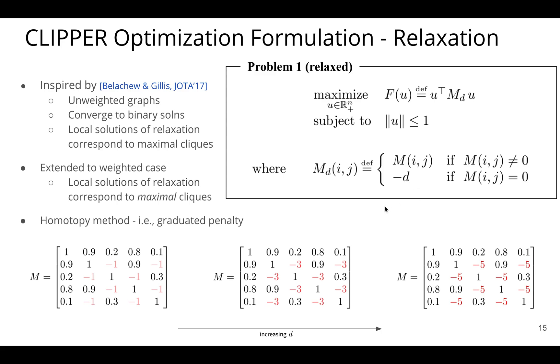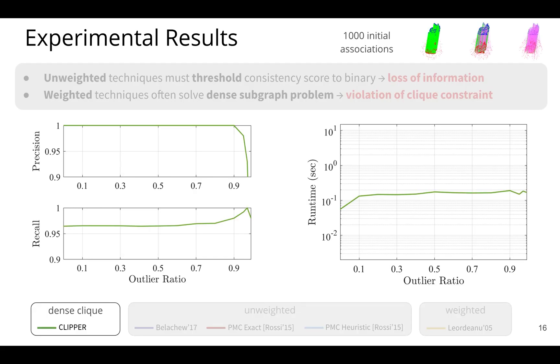And what we do is we solve this in a homotopy fashion. So this is like a graduated penalty. And over time, as we solve this problem, we keep increasing the size of D to penalize these incorrect edges more. So this is a non-convex problem. You can solve it with your favorite solver, of course. We implemented a projected gradient ascent algorithm because of its speed. We found that it's very accurate and also scalable.